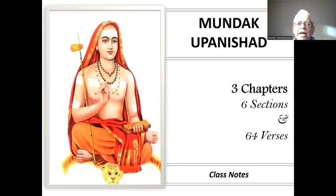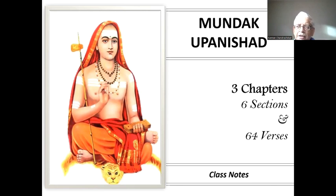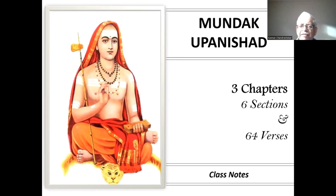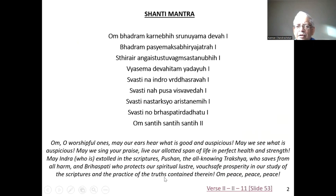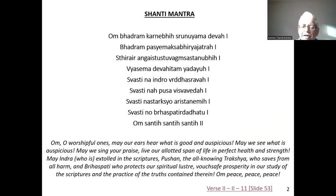We are studying Mundaka Upanishad, consisting of three chapters, each chapter with two sections — a total of six sections and 64 verses in all. This is the second Upanishad we are taking up after Kaivali Upanishad. We have finished two chapters so far, and we are now in the second chapter, second section, the eleventh mantra.